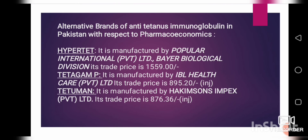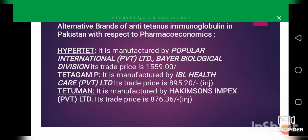Regarding alternative brands of anti-tetanus immunoglobulin in Pakistan, with respect to pharmacoeconomics: HyperTet is manufactured by Popular International Limited, Bear Biological Division, and its price is 1,559 rupees in injectable form. TedCampi is manufactured by Abiel Healthcare with a trade price of 895 rupees, also injectable. Tattooman is manufactured by Hakim Sons and Packs Limited at a price of 876 rupees, also injectable. Comparing prices, HyperTet is quite expensive compared to the other brands.